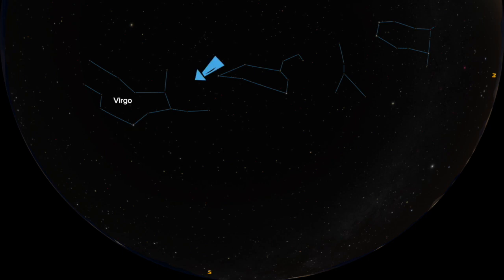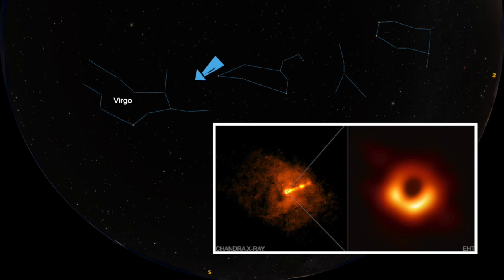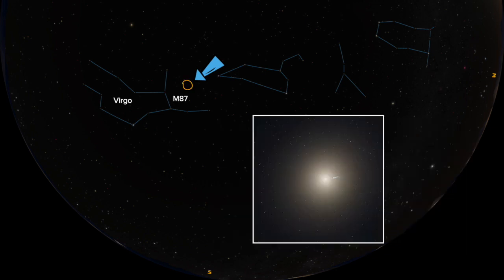This is where the Event Horizon Telescope team aimed their telescopes in order to take the first picture of a black hole, located in the galaxy M87. This elliptical galaxy is 53 million light years away and was discovered in 1781 by Charles Messier.